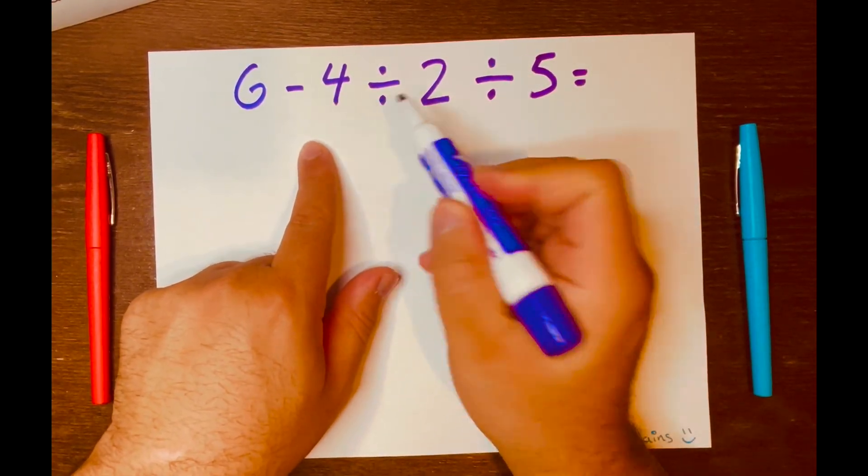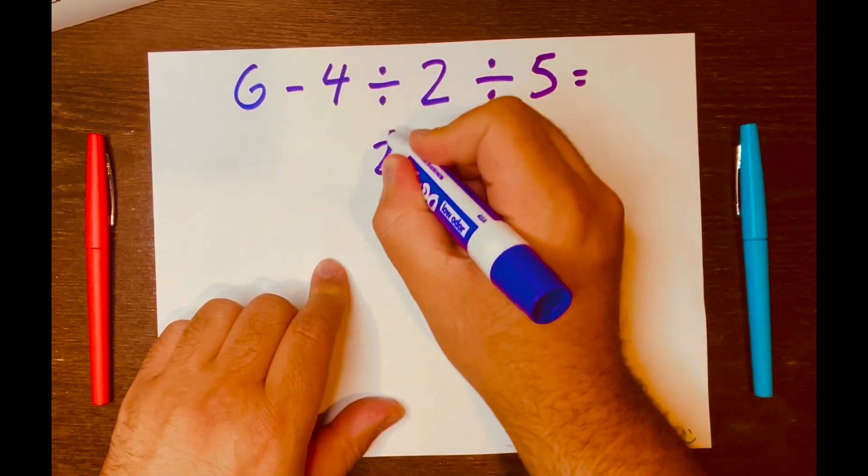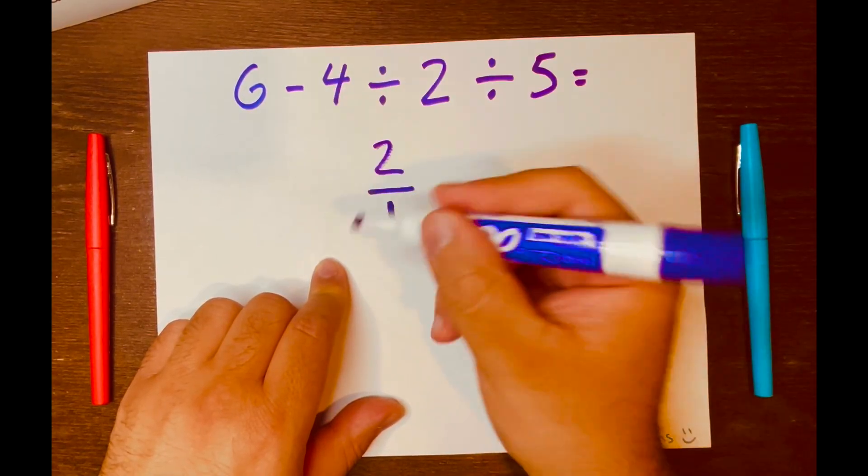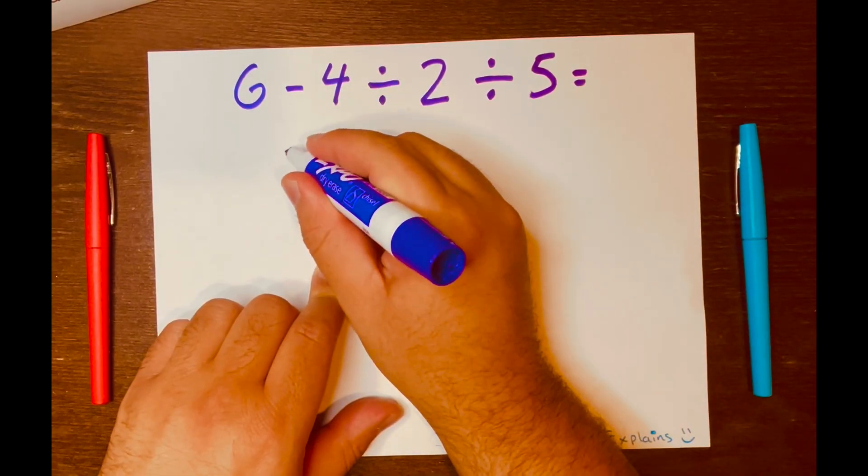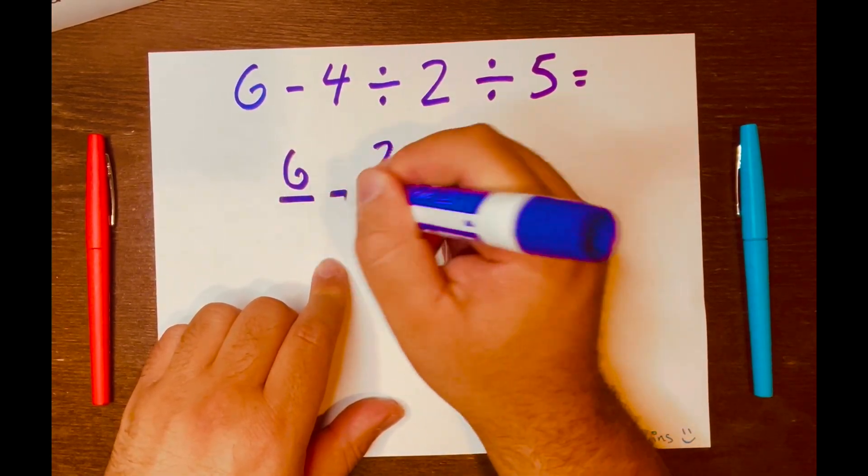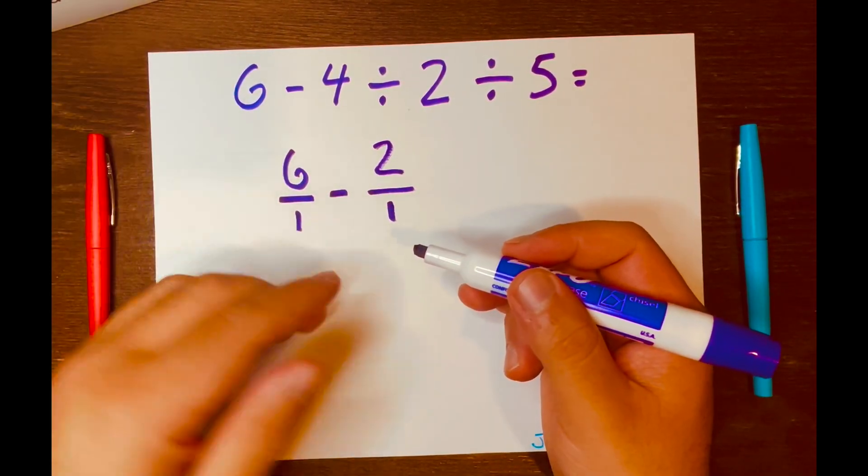So let's start with 4 ÷ 2, which is 2. And I'll write it like this. And I want to write it as a fraction to make the math easy. And then bring down the minus symbol, the 6 down. And I want to write the 6 into a fraction 6/1, because we know 6/1 = 6 does not change the 6. Same with the 2, 2/1 = 2 does not change the 2.